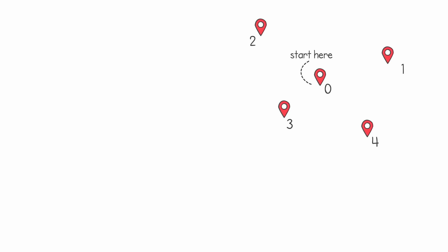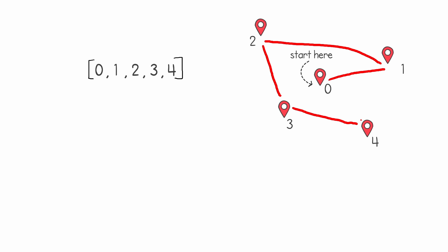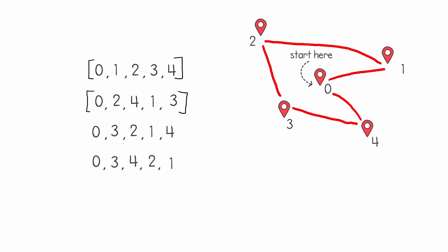To show how we generate the initial population, let's use an example with 5 different points to visit, starting from point 0. All points are marked with a different ID. We can use a list to represent a path — for example, the list [0, 1, 2, 3, 4] means we start from 0, then go to 1, 2, 3, 4, and back to 0. To generate a large population of different routes, we start with this initial list from 0 to n, shuffle it to create a new path, and repeat this many times until we have generated our initial population.